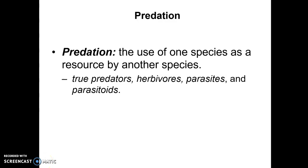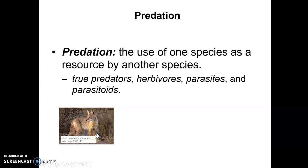A second type of interaction between two species is categorized as predation — the use of one species as a food resource by another species. These come in a variety of forms. First is a true predator, shown here in the slide as the coyote. A true predator hunts its food and consumes most of the other organism as its food.